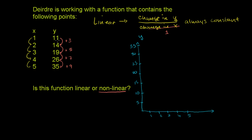Let's plot these points. When x is 1, y is 11 — right about there. When x is 2, y is 14 — right about there. When x is 3, y is 19 — right about there. When x is 4, y is 26 — right about there. And finally, when x is 5, y is 35 — right up there.